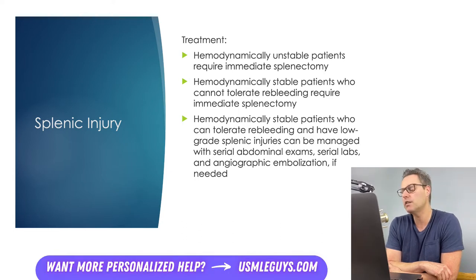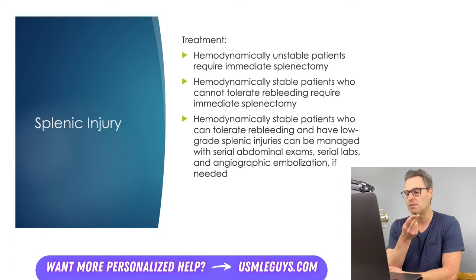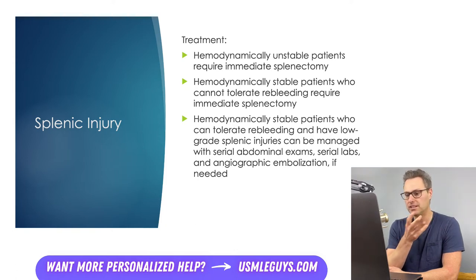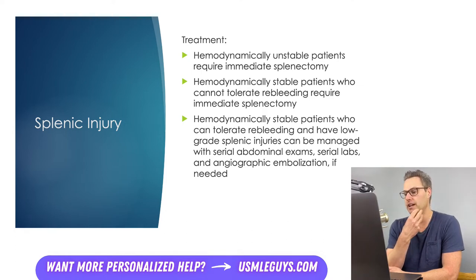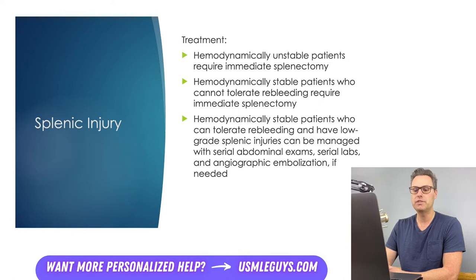Hemodynamically stable patients who cannot tolerate re-bleeding will also require immediate splenectomy, as well as those with multiple abdominal organ injuries, including the spleen, resulting in persistent bleeding. Only hemodynamically stable patients who can tolerate re-bleeding and have a low-grade splenic injury can be managed with serial abdominal exams, serial labs to monitor for continued hemorrhage, and angiographic embolization if needed. This would exclude a completely shattered spleen or over a quarter of the spleen being devascularized — that degree of severe injury would need surgical management even if the patient is hemodynamically stable. Patients who fail non-operative management or angiographic embolization will need a splenectomy.